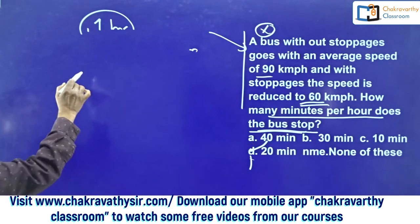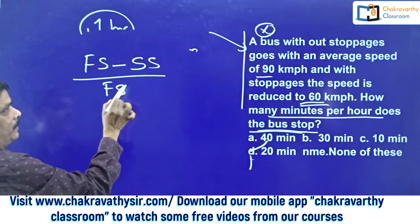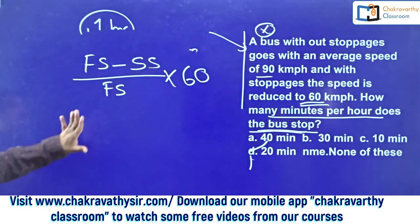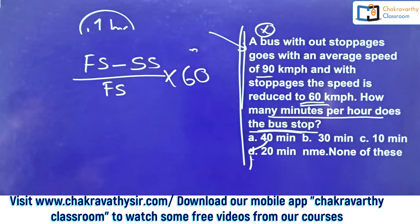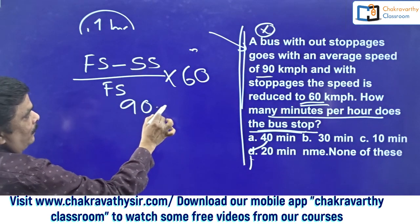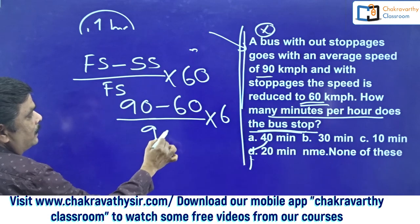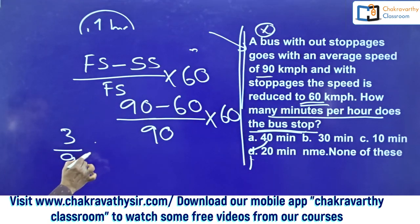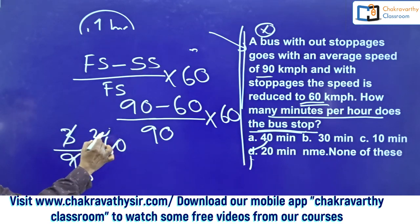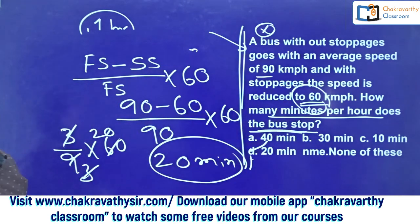The shortcut formula is: (faster speed − slower speed) / faster speed × 60. This is applicable only when the question is in this format; otherwise go back to the logical method. Substituting: (90 − 60) / 90 × 60 = 30/90 × 60 = (1/3) × 60 = 20 minutes per hour. Because of those 20 minutes of stoppages, the average speed has been reduced from 90 to 60 km/h.